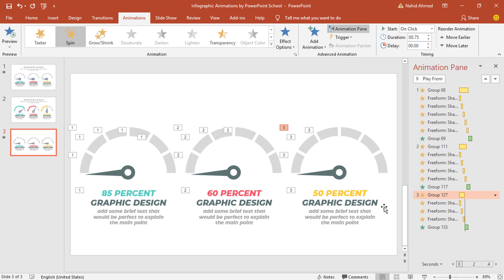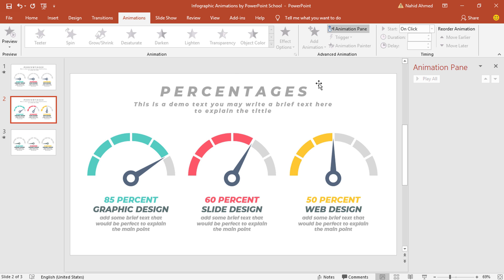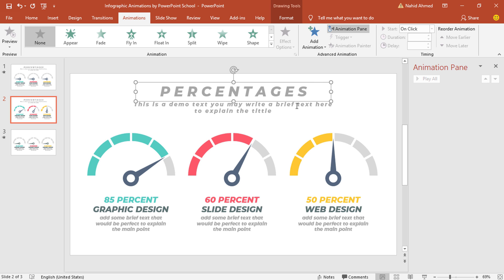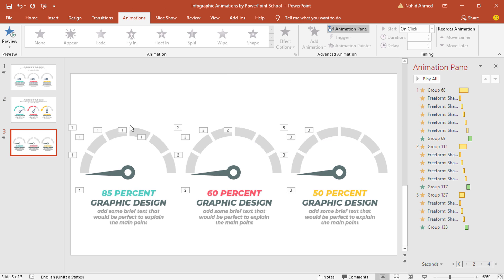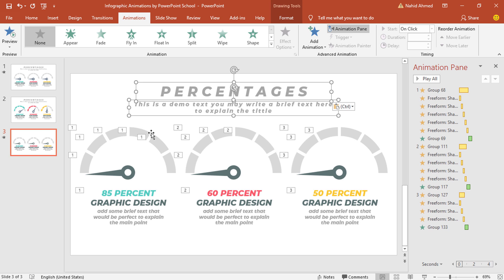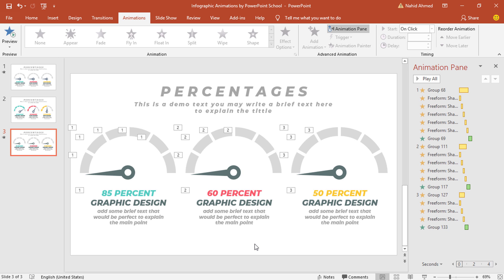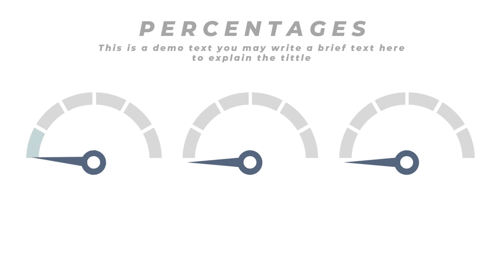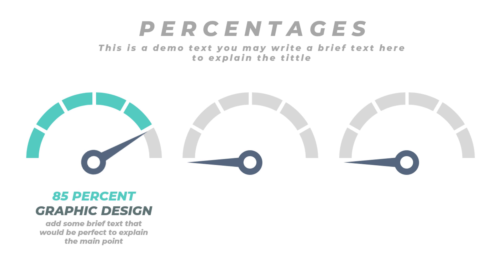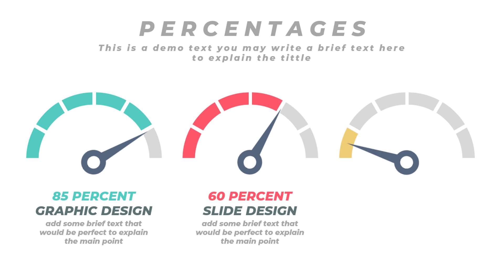We're almost done. From our previous slide I'll copy the upper portion, press CTRL+C to copy and CTRL+V to paste — and we are done. Now if you start the slideshow, you can see our animation is going on very smoothly and it is looking great.